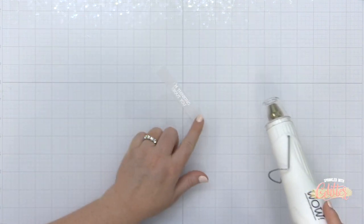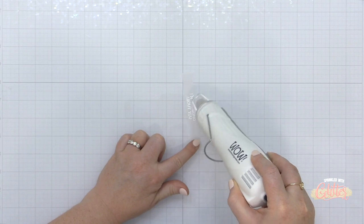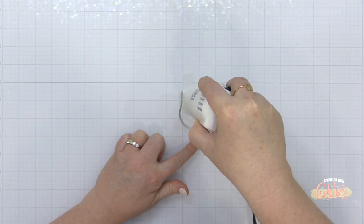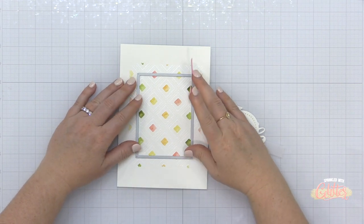So once I've stamped that, I'm going to add my white embossing powder. I'm going to heat set that with my heat tool. And then I have a great little sub-sentiment.